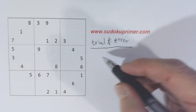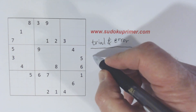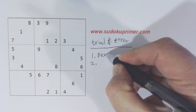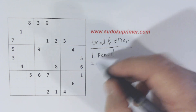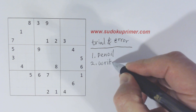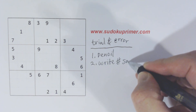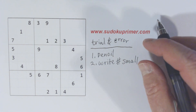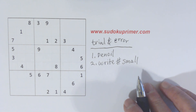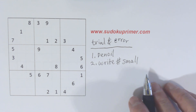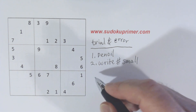With trial and error, you do two things differently. You use a pencil instead of a pen, if you use a pen normally, and you write the numbers really small. The reason you do that is if you chose the wrong cell for the number you're trying, you can erase the numbers that you've put in the puzzle during the trial and error.